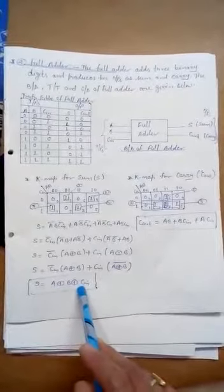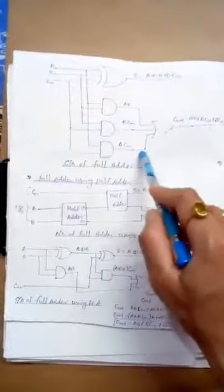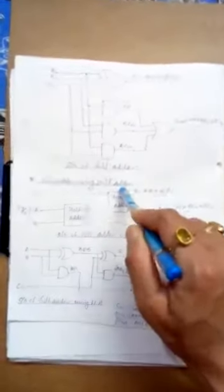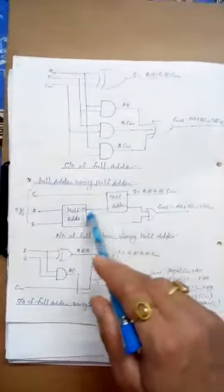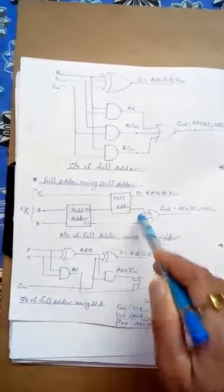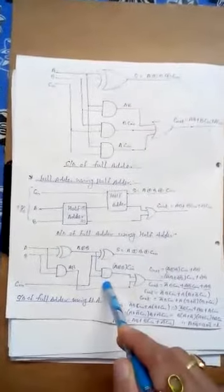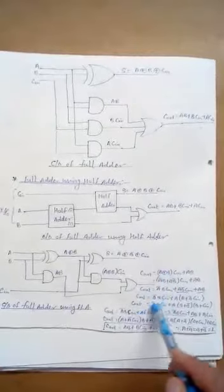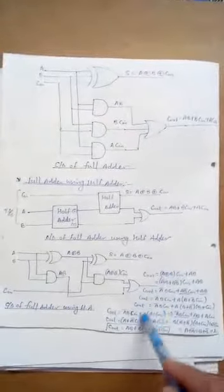For the circuit diagram of the full adder, for sum we need an XOR gate whose inputs are A, B, and C-IN. For carry, we need three AND gates and one OR gate. This is the circuit diagram of full adder. Next topic is full adder using half adder. This is the block diagram of full adder using half adder, and this is the circuit diagram of full adder using half adder. This is the explanation of the output of this circuit.